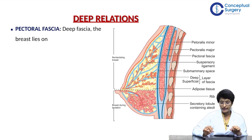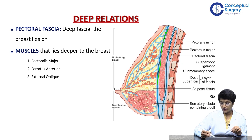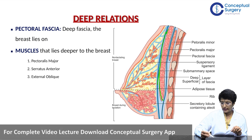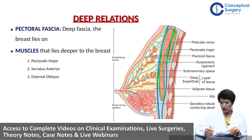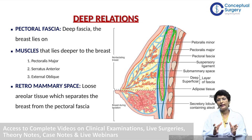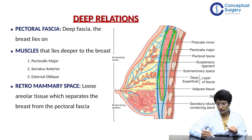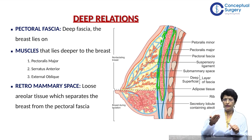Moving to the deep relations — the pectoral fascia is the deep fascia on which the breast lies. The muscles on which the breast lies include pectoralis major and pectoralis minor. There is also the retromammary space, which separates the breast from the pectoral fascia. This is what you have to lift when lifting the breast off the pectoral fascia, or along with the pectoral fascia.